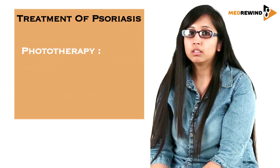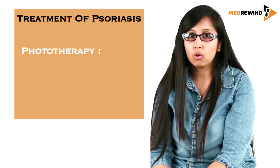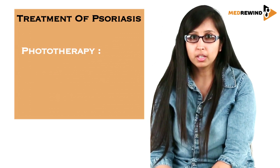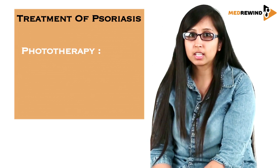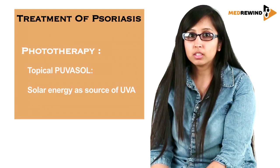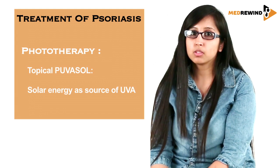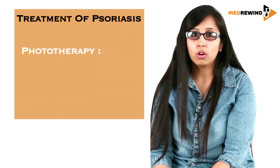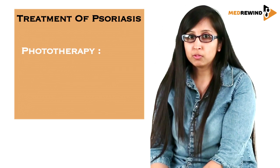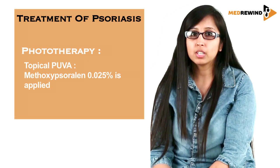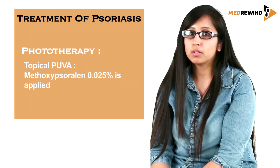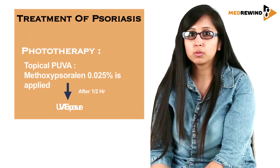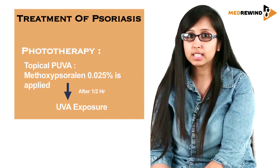In UVA, it can be either PUVA or PUVASOL. In PUVA, the patient stands in a chamber and artificial UVA light is given. But in PUVASOL, solar energy is used as the source of UVA. It can be either topical or oral. In topical PUVA or PUVASOL, the patient applies melanocell lotion — which comes in a concentration of 0.025% — and half an hour later exposes to the sun or stands in the UV chamber.